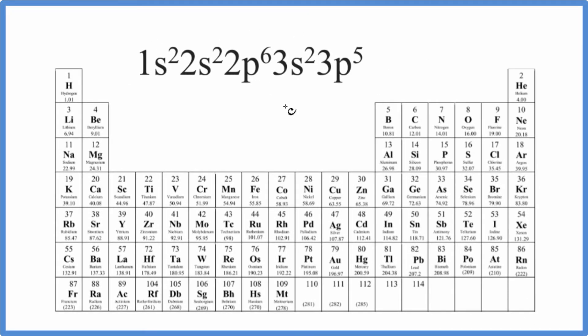So the question is, if we're given this electron configuration here: 1s²2s²2p⁶3s²3p⁵, what element on the periodic table does this represent?